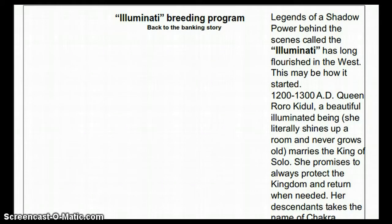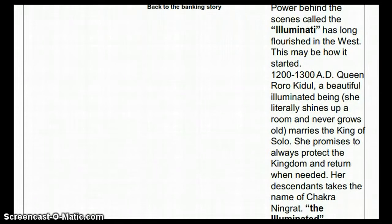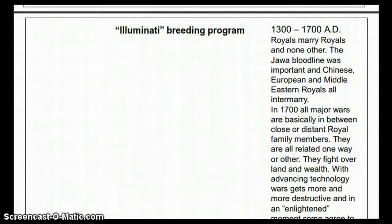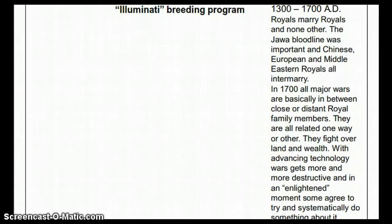From 1200 to 1300 AD, Queen Royal Kaidil — a beautiful, illuminated being who literally shines up a room and never grows old — married the King of Solo. She promised to always protect the kingdom and return when needed. Her descendants took the name Chakra Ningrat, the Illuminated. From 1300 to 1700 AD, royals married only royals. The Jawa, Chinese, European, and Middle Eastern royal bloodlines all intermarried. By 1700, all major wars were basically between close or distant royal family members, and in an enlightened moment, some agreed to systematically do something about it.